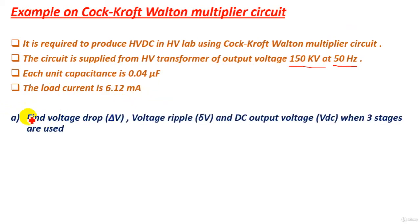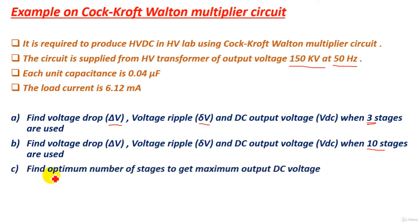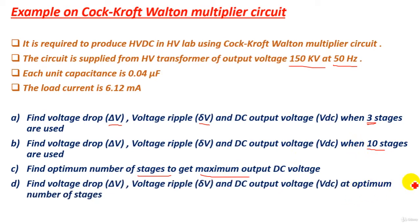What is required? First, find the voltage drop ΔV, the voltage ripple, and the DC output voltage when three stages are used. Find also ΔV, voltage ripple, and DC output voltage when 10 stages are used. Next, find the optimum number of stages to get maximum output DC voltage, and at this optimum number of stages find the voltage drop, the voltage ripple, and the DC output voltage.